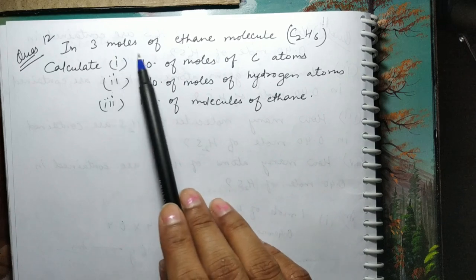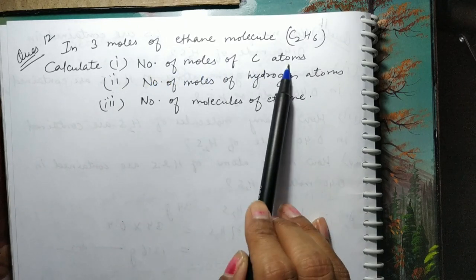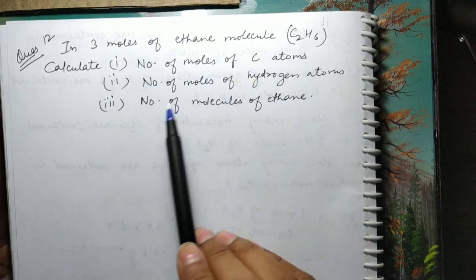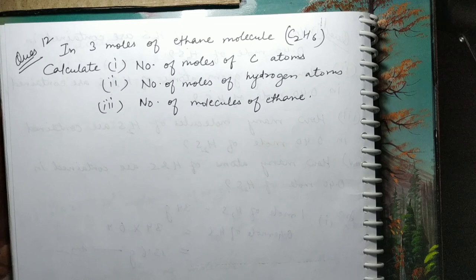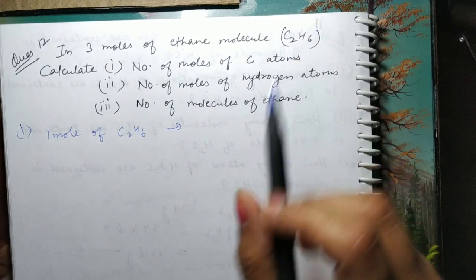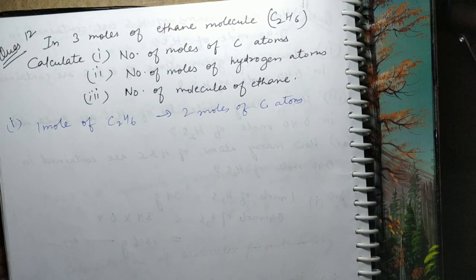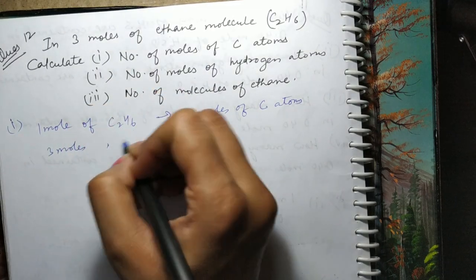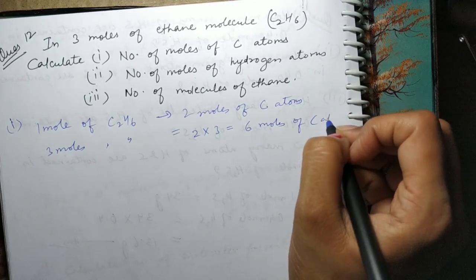Next question: in 3 moles of ethane molecule (formula C₂H₆), calculate number of moles of carbon atoms, hydrogen atoms, and molecules of ethane. First part: 1 mole of C₂H₆ contains 2 moles of carbon atoms. So 3 moles of ethane = 2×3 = 6 moles of carbon atoms.